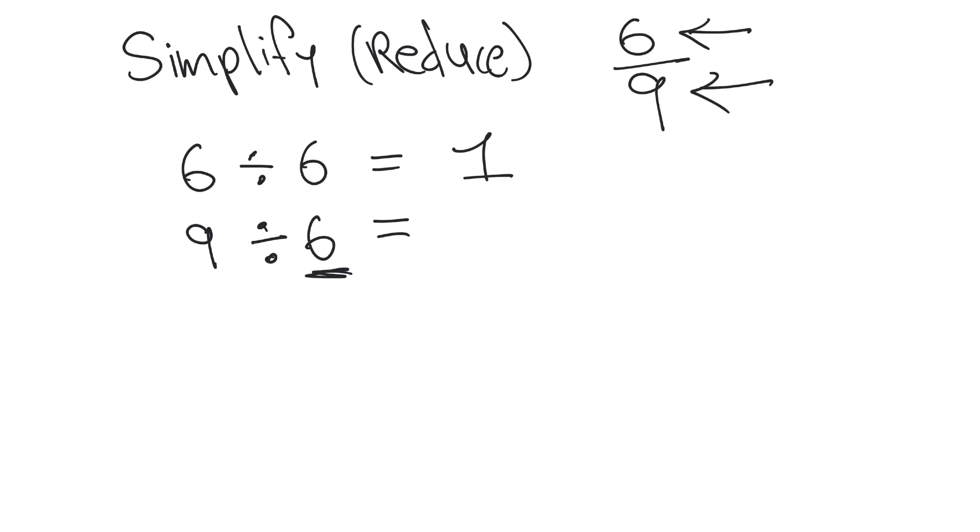That works. So 6 divided by 3, that equals 2. Now we try in our denominator, 9 divided by 3. That also works. That equals 3. So our new simplified and reduced fraction becomes 2 over 3.